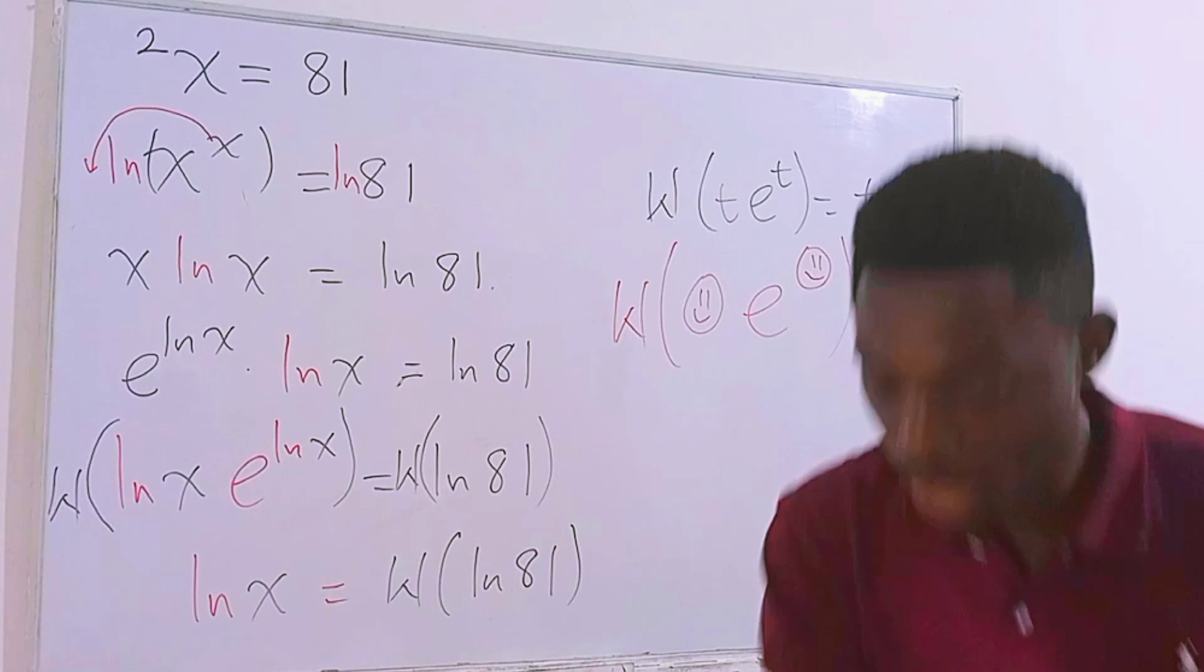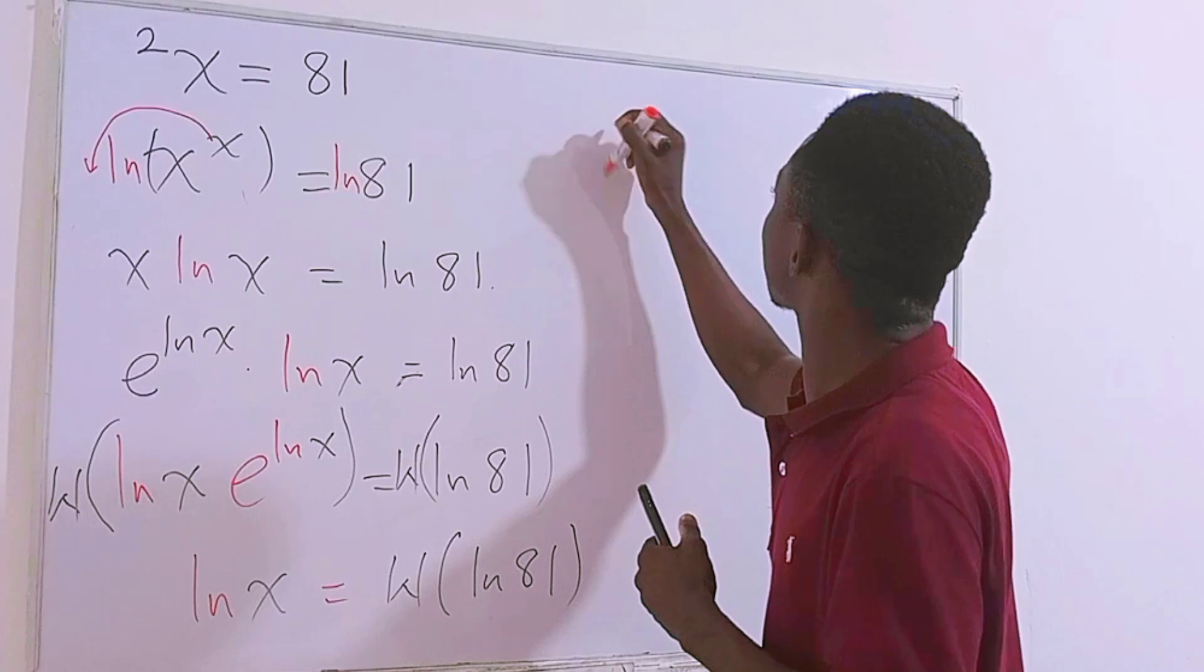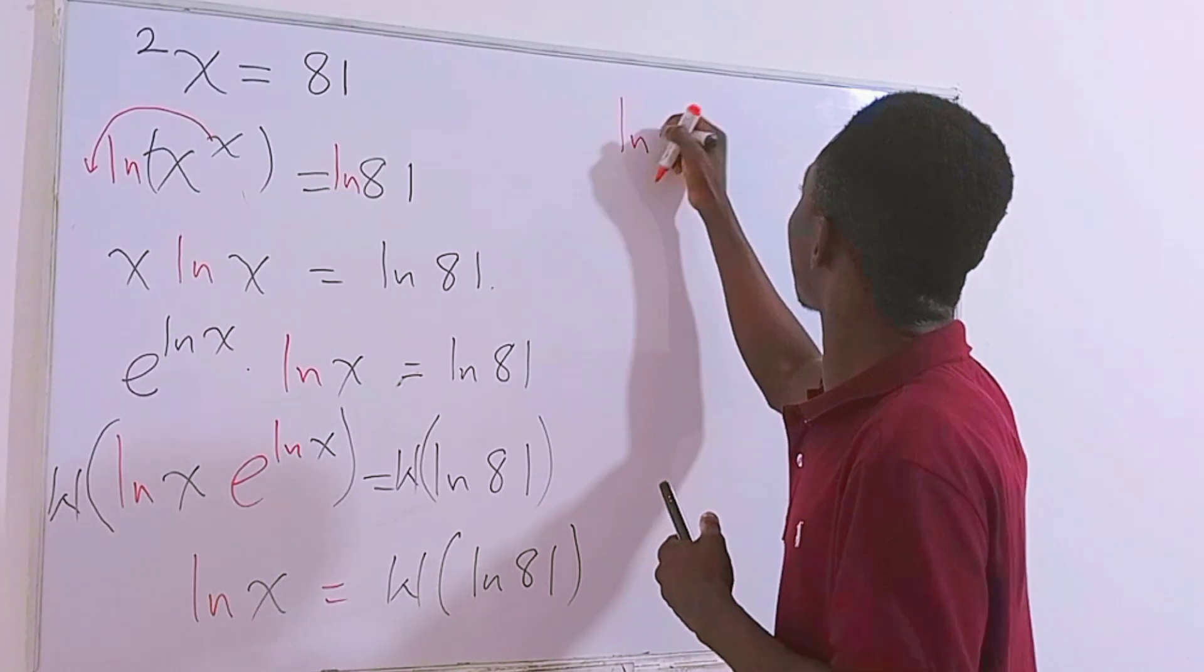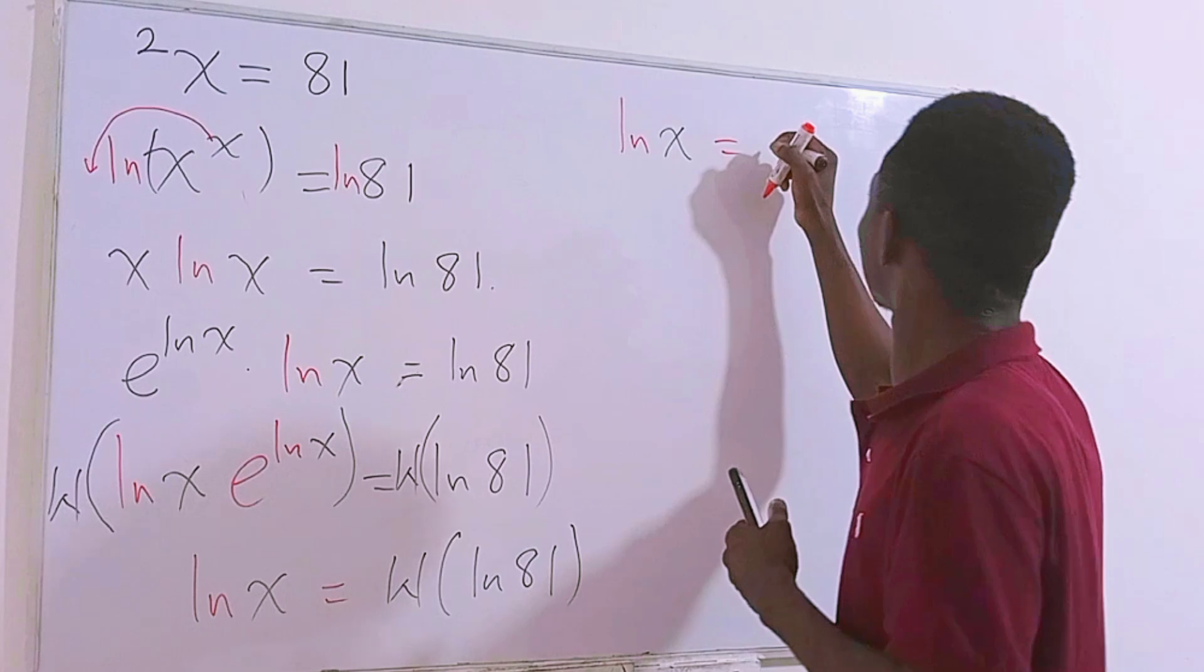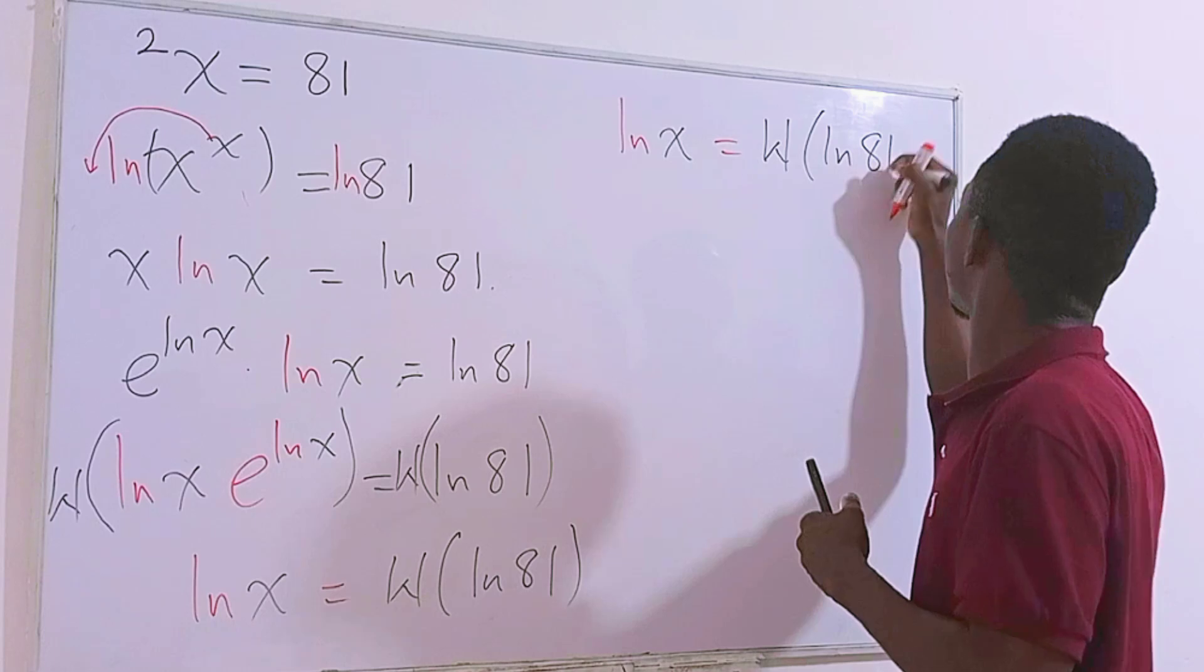And now on the left hand side we'll be left with just ln of x. And this is equal to the Lambert W function of ln of 81. As simple as that. I'm gonna get rid of this quickly. Now let me write it here. ln of x is now equal to the Lambert W function of ln of 81.